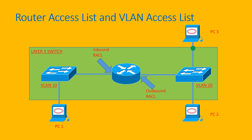However, traffic between PC2 and PC3 within the same VLAN is never sent to the router, so the RACL does not get a chance to evaluate the packet and no action can be taken. In order to filter packets within a VLAN, we need to use VACL.